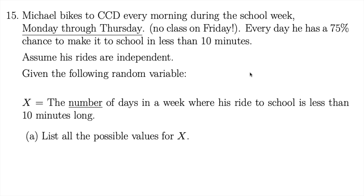Let's start by reading this question. Michael bikes to Community College of Denver every morning during the school week, Monday through Thursday. Every day he has a 75% chance to make it to school in less than 10 minutes. Assume his rides are independent. The variable x is the number of days in a week where his ride to school is less than 10 minutes long. In part a, we're asked to list all the possible values for x.